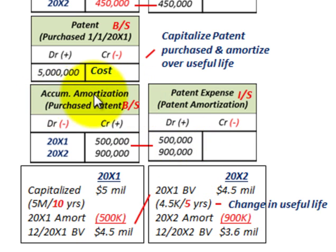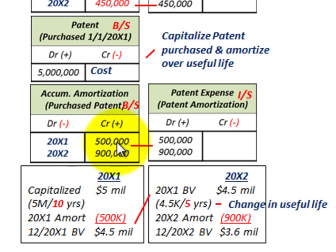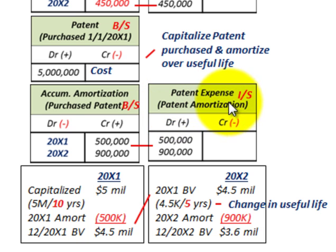Let's look at how we record it. Accumulated amortization on this purchased patent is a contra account to the patent asset account — it reduces the patent account. For 20x1, we credit accumulated amortization for $500,000. For 20x2, since we had a change in useful life, we credit accumulated amortization for the new amount of $900,000. We recognize patent expense on the income statement: debiting $500,000 for 20x1 and $900,000 for 20x2.